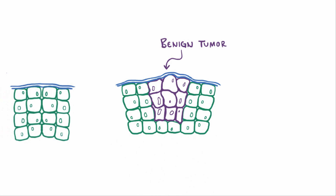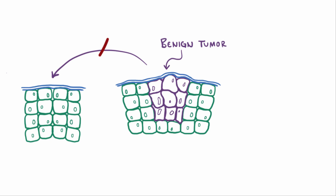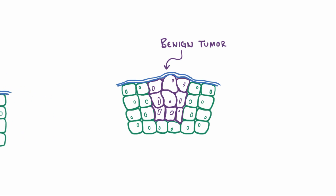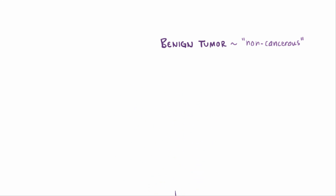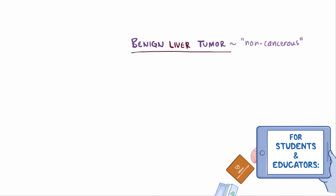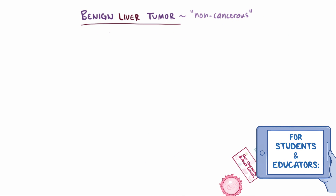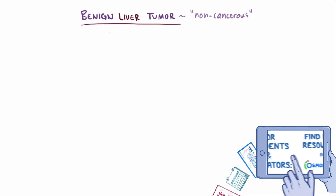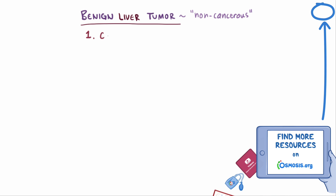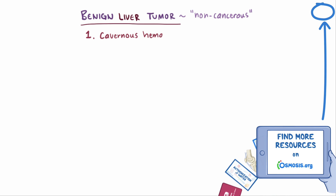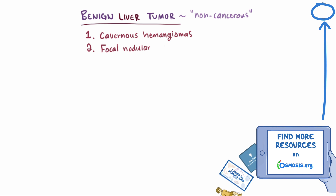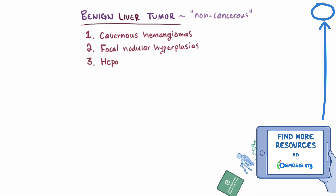Benign tumors are masses of cells that can't invade neighboring tissues or organs, and therefore are usually defined as non-cancerous. Benign liver tumors are actually pretty common, and typically don't cause any serious complications. There are three major types: cavernous hemangiomas, focal nodular hyperplasias, and hepatocellular adenomas.